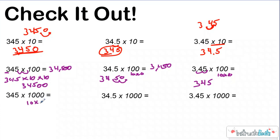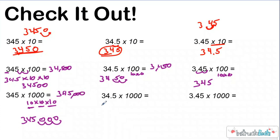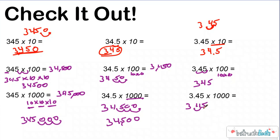A thousand is really ten times ten times ten, or ten to the third power — it all goes back to powers of ten — which means I need to move each digit three place values over. I'm just going to move my decimal, which is next to the ones place, and multiplying by ten times ten times ten gives me three hundred forty-five thousand. Same thing for thirty-four and five tenths: a thousand is ten times ten times ten, so I move those digits three place values, giving me three, four, five, zero, zero — thirty-four thousand five hundred. One more time, moving three place values gives me three thousand four hundred fifty.